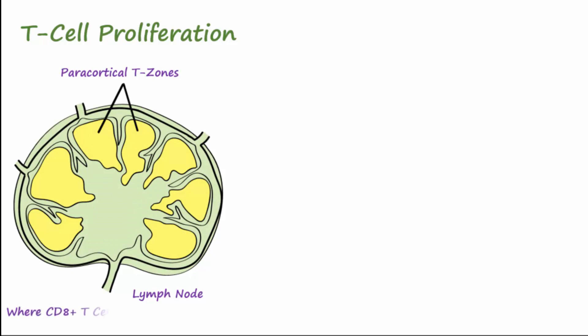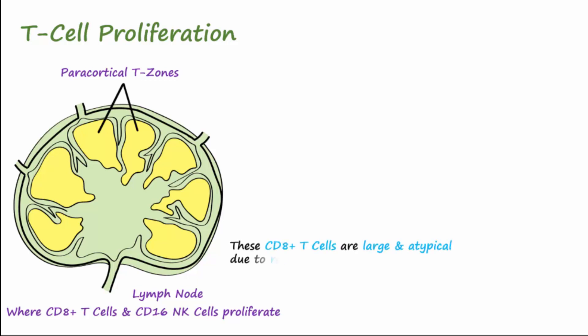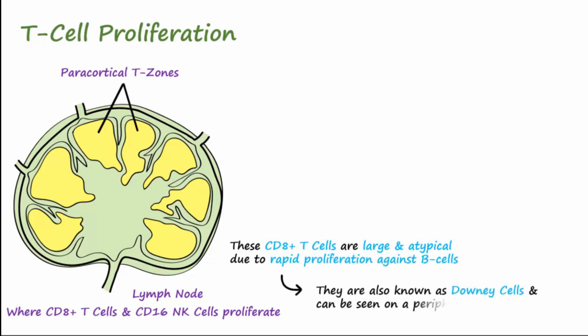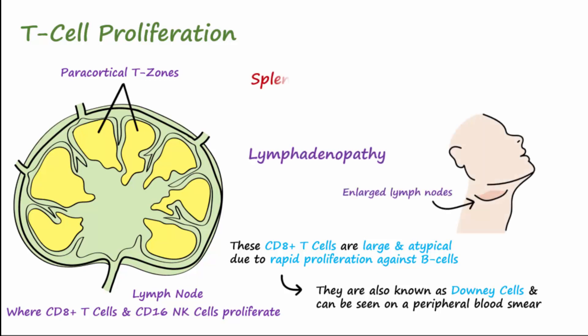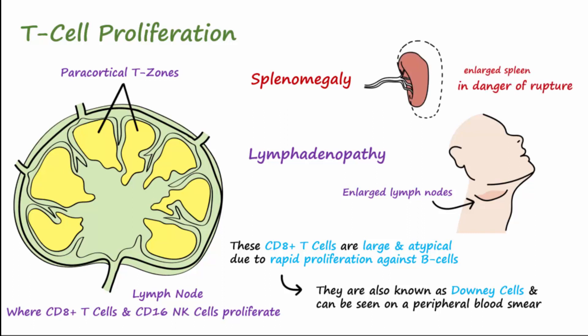In the pericortical T zones of the lymph nodes, T cells and NK cells proliferate. Due to the rapid proliferation of T cells being mounted against the infected B cells, some CD8 positive T cells can form atypically and become very large. These atypical CD8 positive T cells are known as downy cells and can be observed on a peripheral blood smear. T cell proliferation is the main cause for lymphadenopathy, or enlargement of lymph nodes, as well as splenomegaly. The spleen can become quite large and be in danger of rupture.